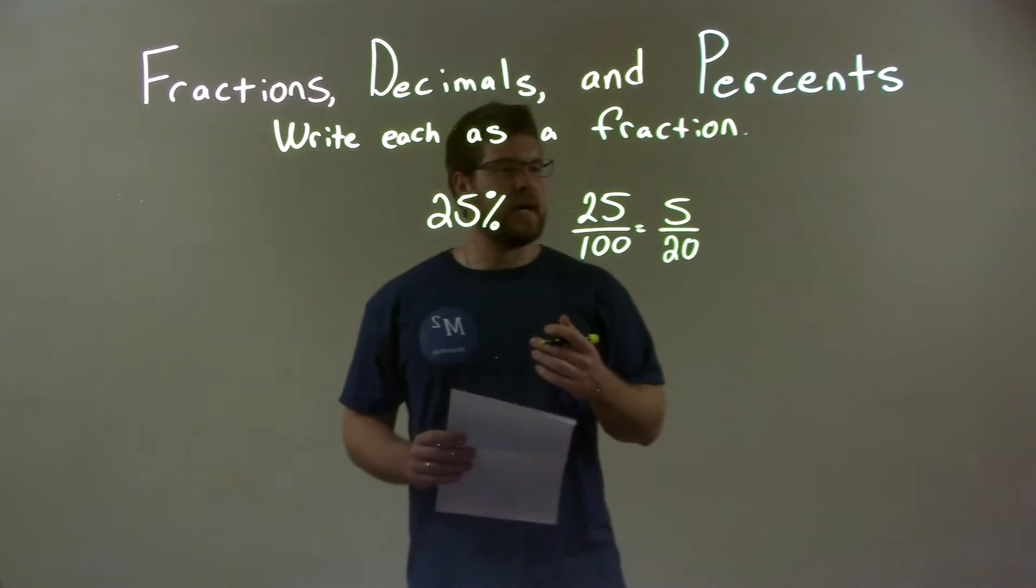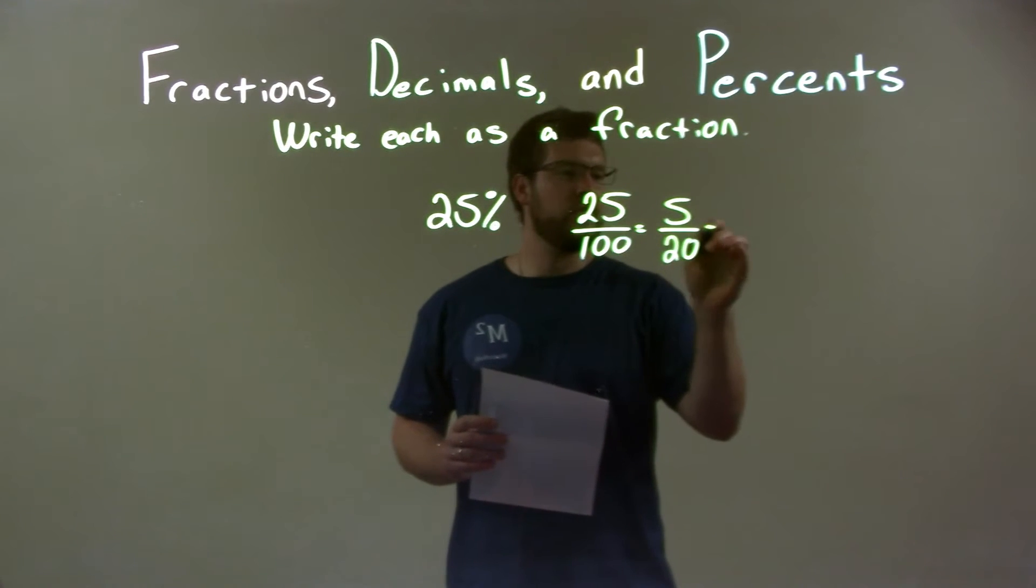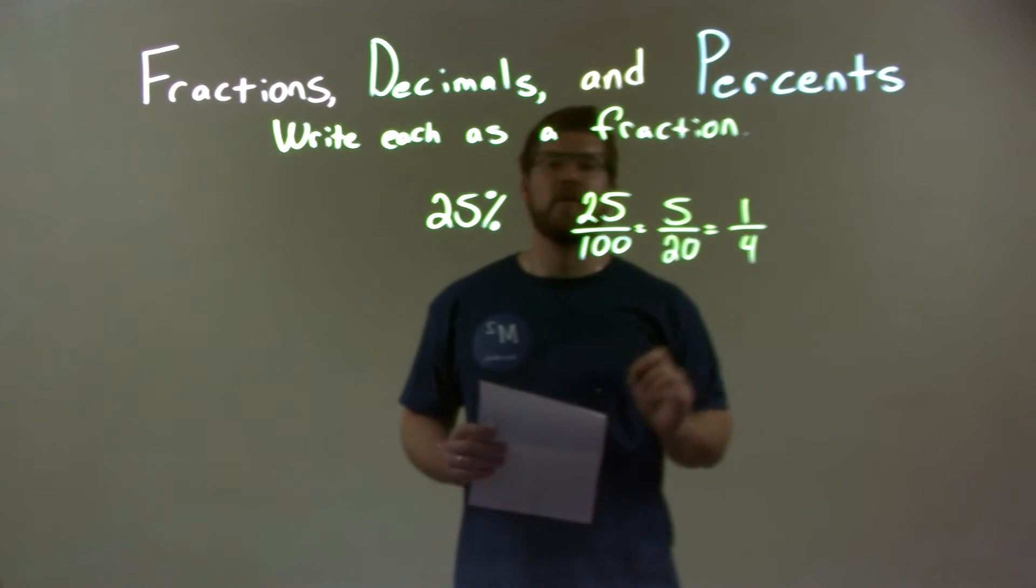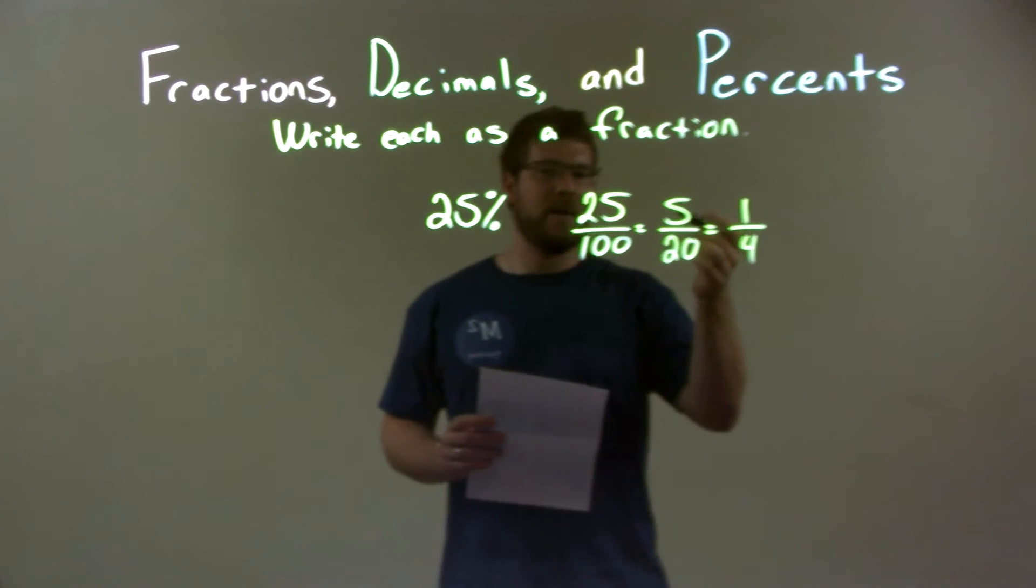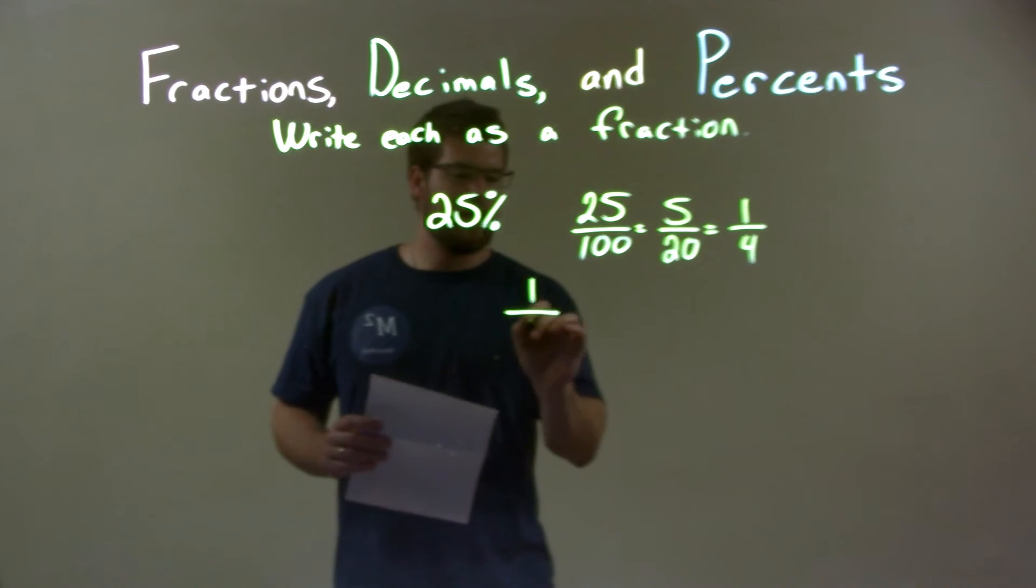But yet I still can write this down, right? Because five goes into twenty. Five goes into twenty four times, so we have, well, one-fourth, right? Five goes into five one time, and five goes into twenty four times, one-fourth. So our final fraction answer is one-fourth.